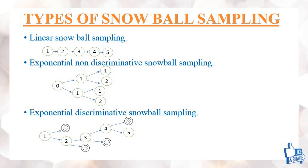The second type is exponential non-discriminating snowball sampling. Here the researcher finds the first person and seeks help from that first subject to identify two other subjects. The researcher then approaches those two subjects, and each subject recruits two more samples, continuing in this way until the required number of samples is reached.